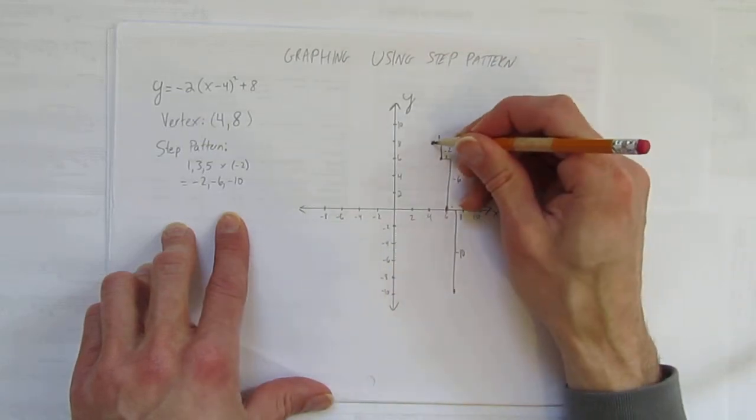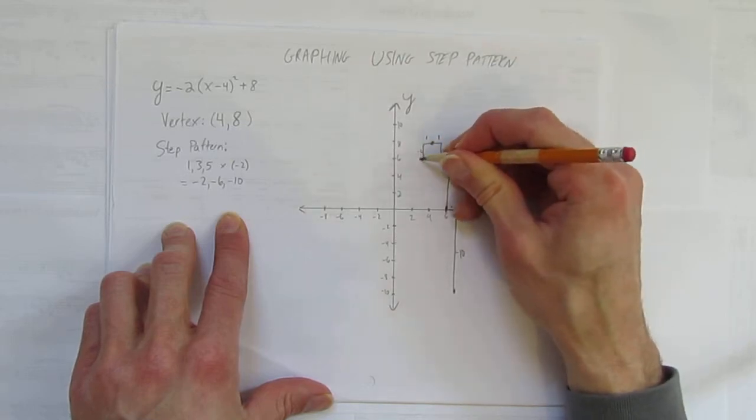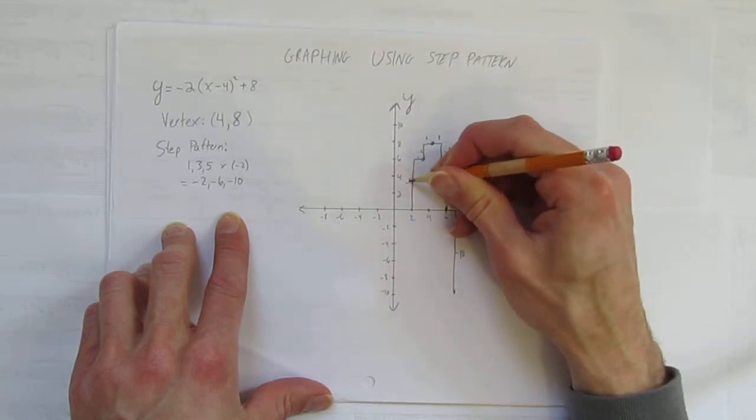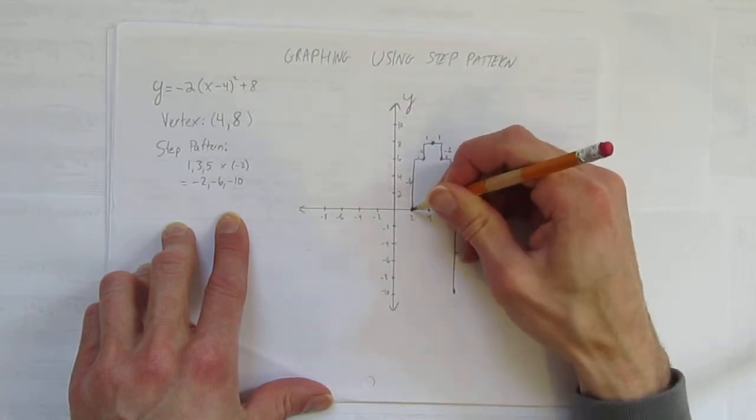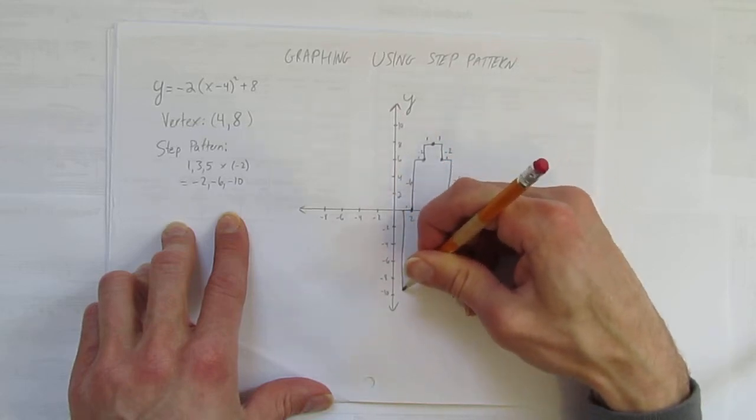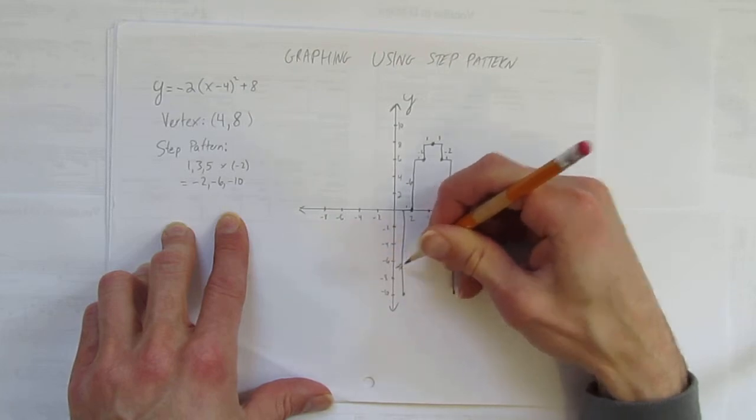Let's do it on the other side. Over 1, down negative 2. And I'm labeling that. Over 1, down negative 6. Put a dot. Over 1, and then down. Down negative 10. Labeling that as well.